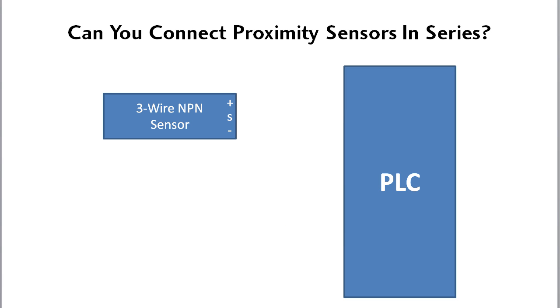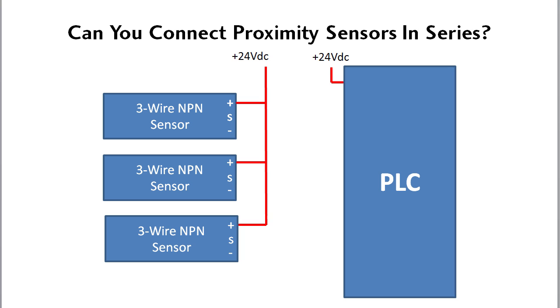If you have a three wire NPN sensor, then wire it like this. Connect the sensors and the PLC to 24 volts. Connect the first signal wire to the PLC and the negative terminal of that sensor to the signal wire of the next sensor. Do that again with the third sensor.